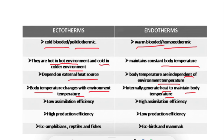Another point is that ectotherm animals have low assimilation efficiency, whereas endotherm animals have higher assimilation efficiency. When it comes to production efficiency, production efficiency is higher in ectotherms whereas it is lower in endotherms.